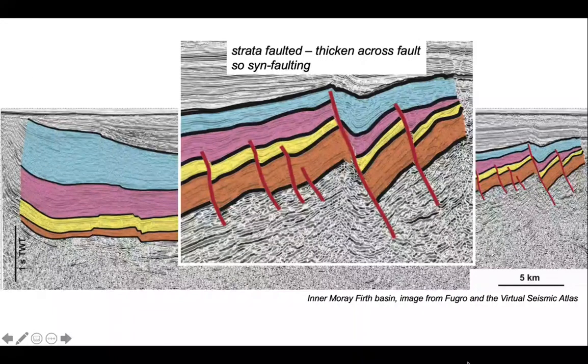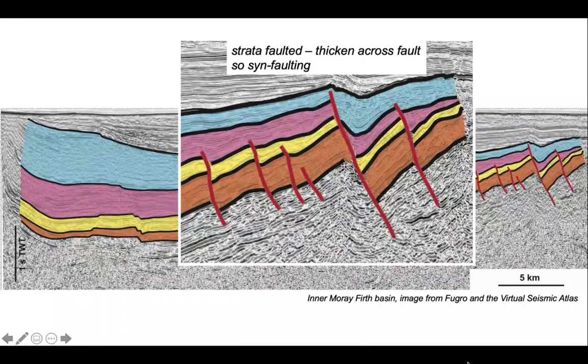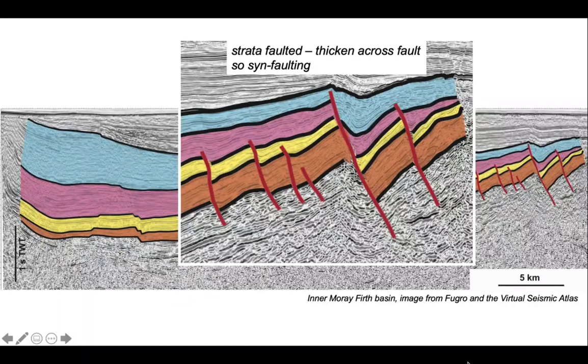Let's zoom in and you can perhaps see that the blue horizon there does indeed across this fault block show thickness variations and shows deformation that decreases upwards through its own package. So that's also synrift there.